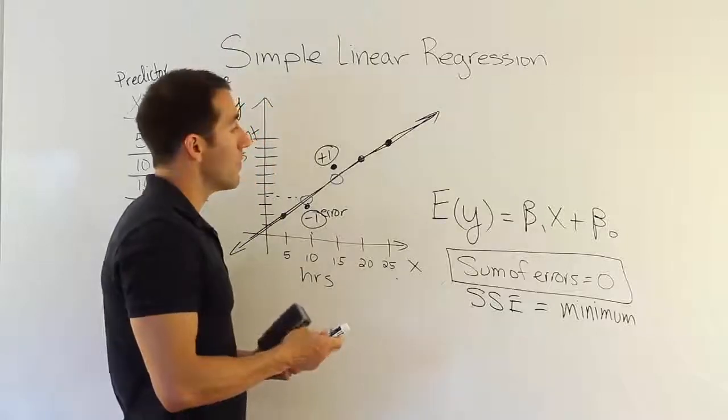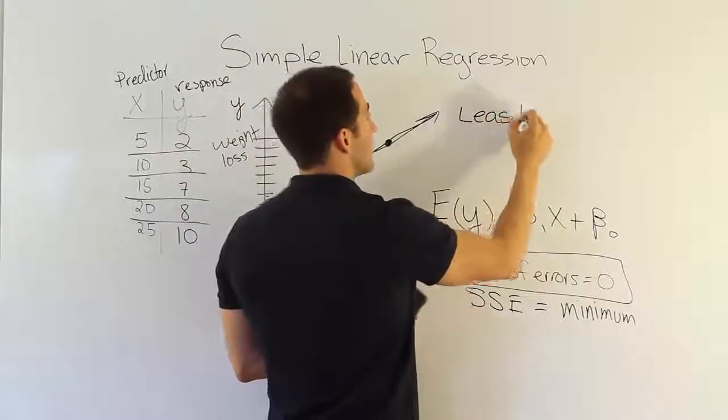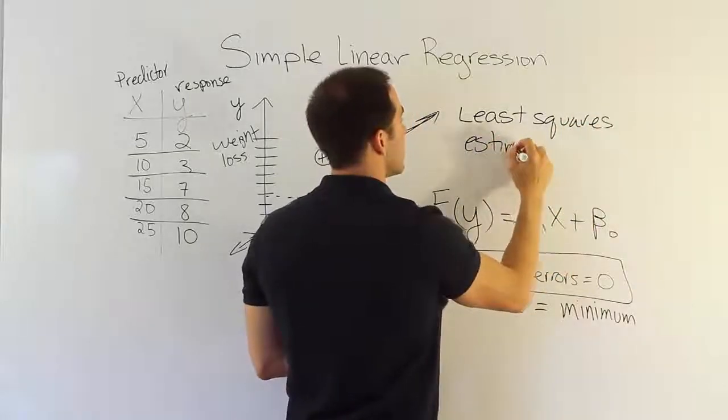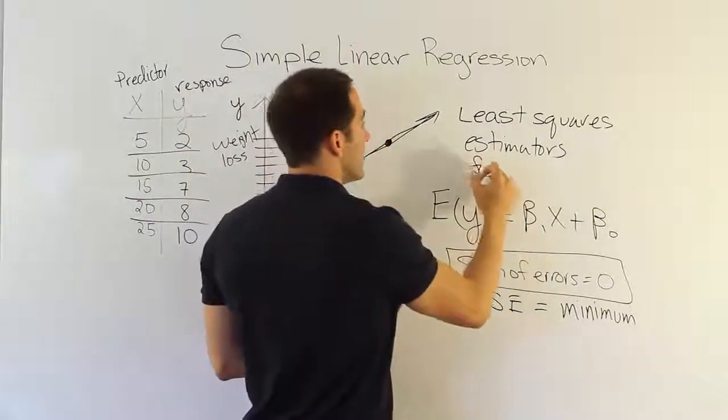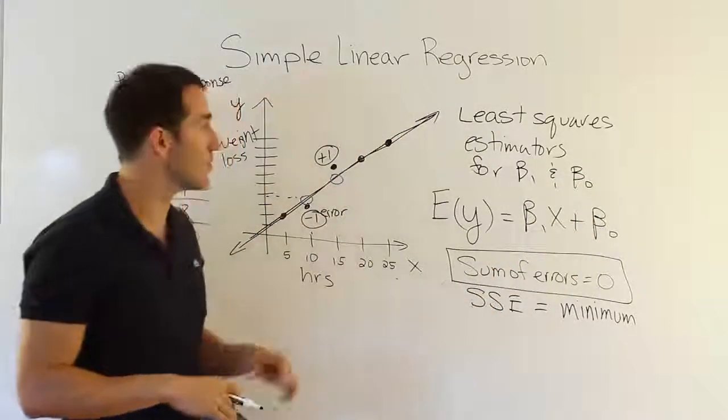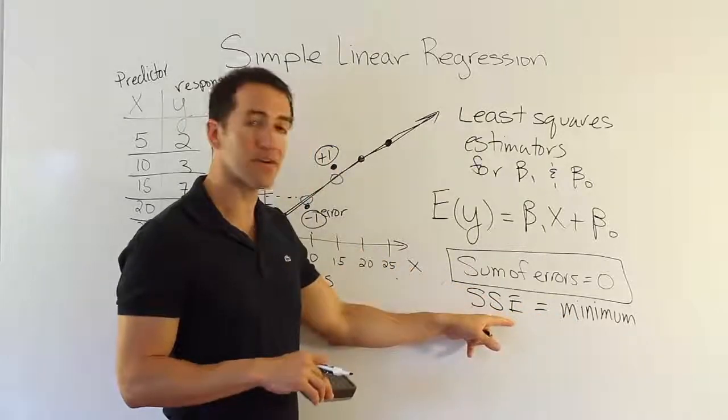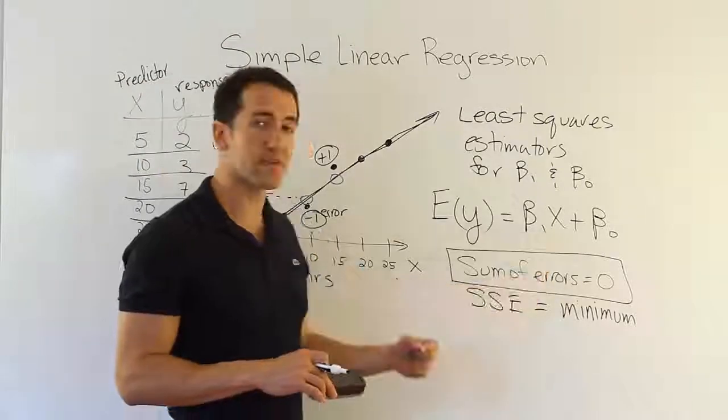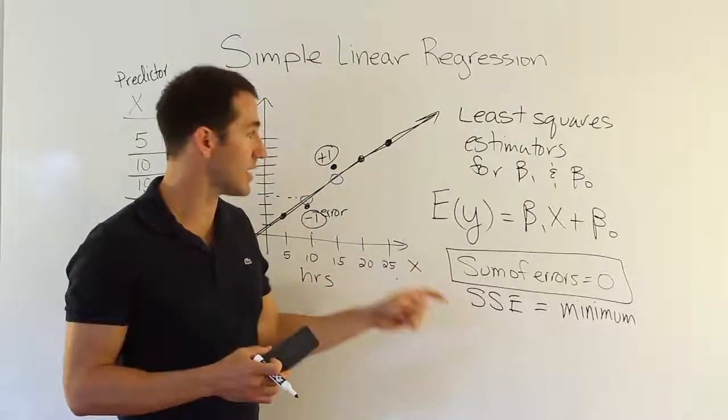In order to estimate them so that your line has these two properties, you're going to use something called the least-squares estimators. Least-squares estimators for beta1 and beta0. Least-squares estimators, you can tell by the name, least-squares, the smallest sum of squares, basically is what it's going to give you. So they're going to give you the line that has the slope and the y-intercept such that that line fits these points so that it has the sum of error is equal to zero, and the smallest possible sum of square error.